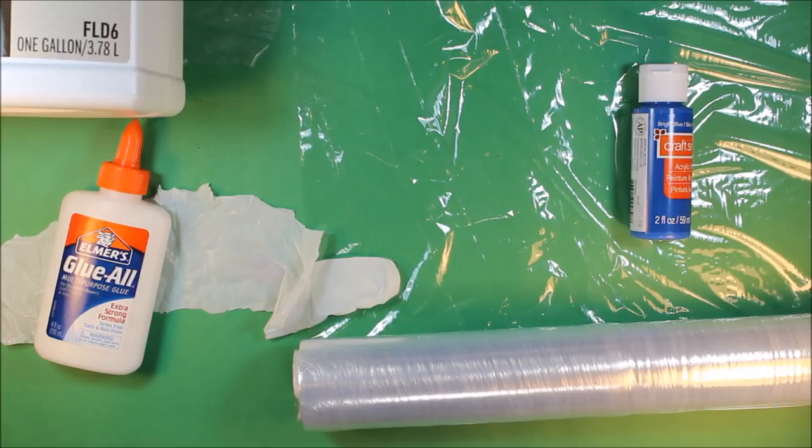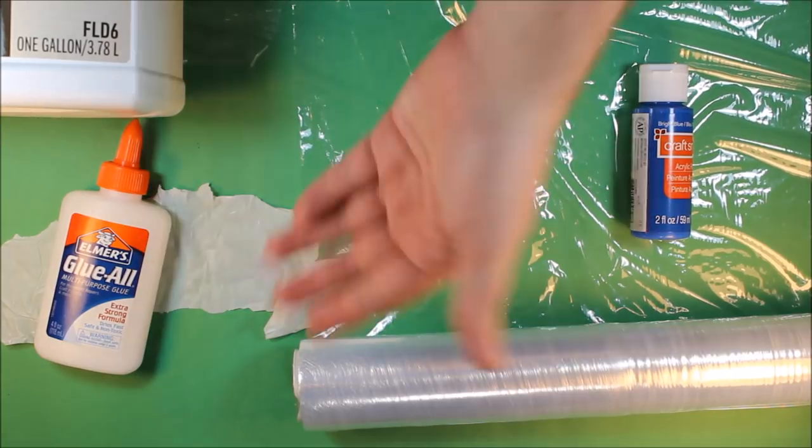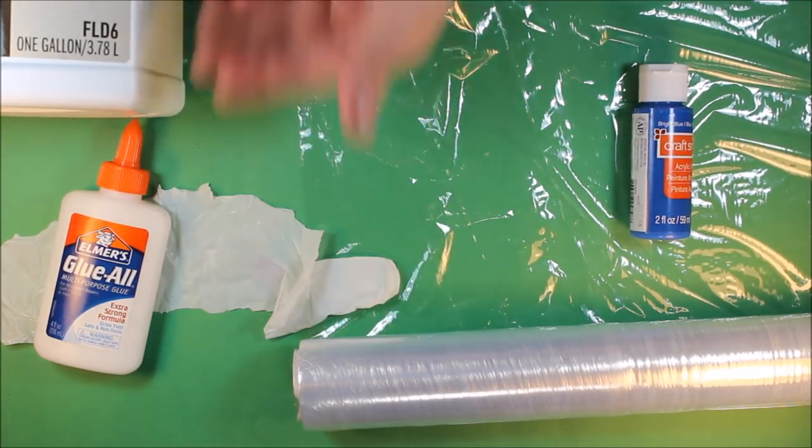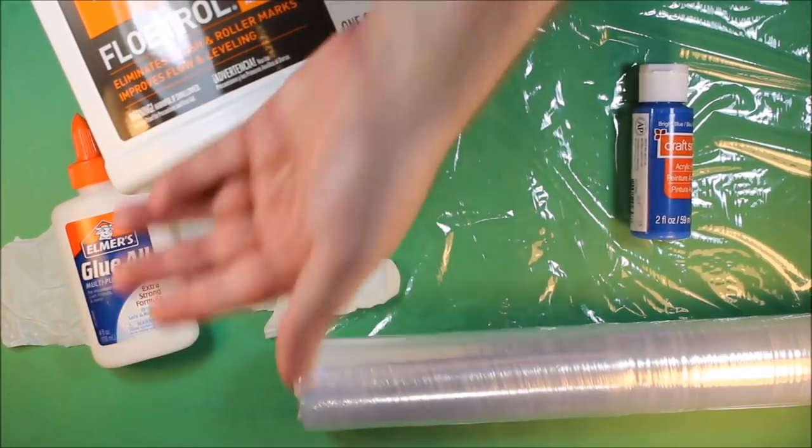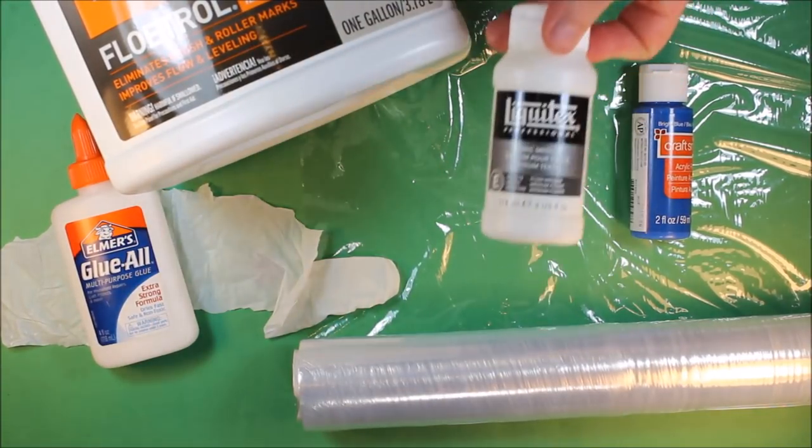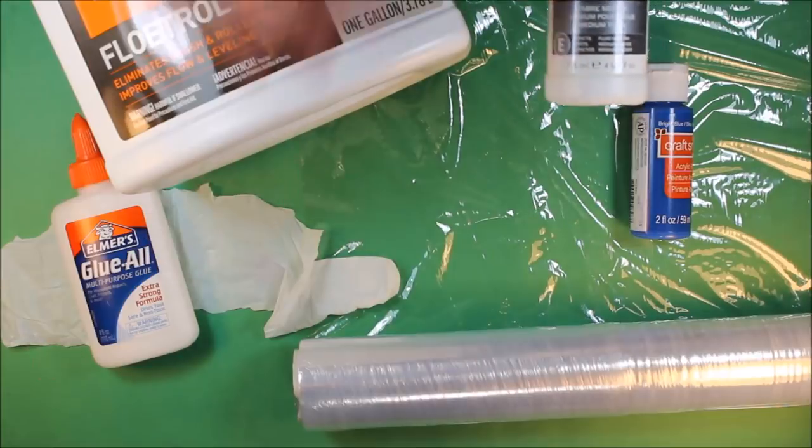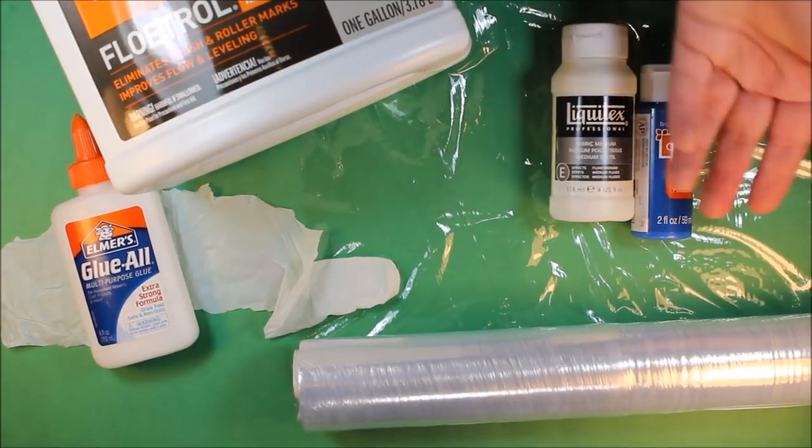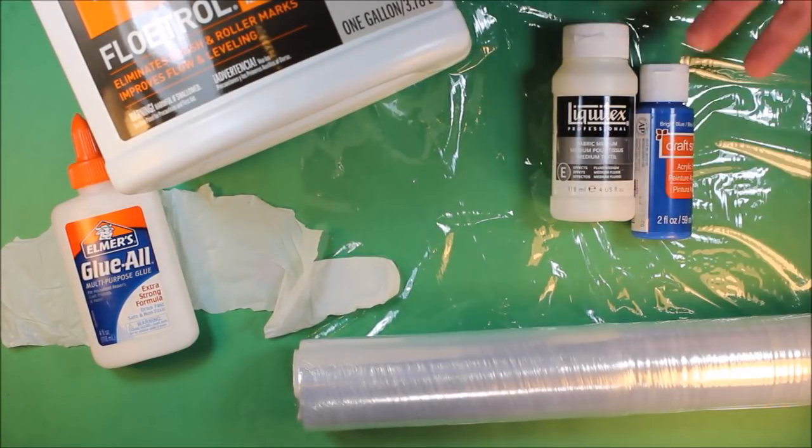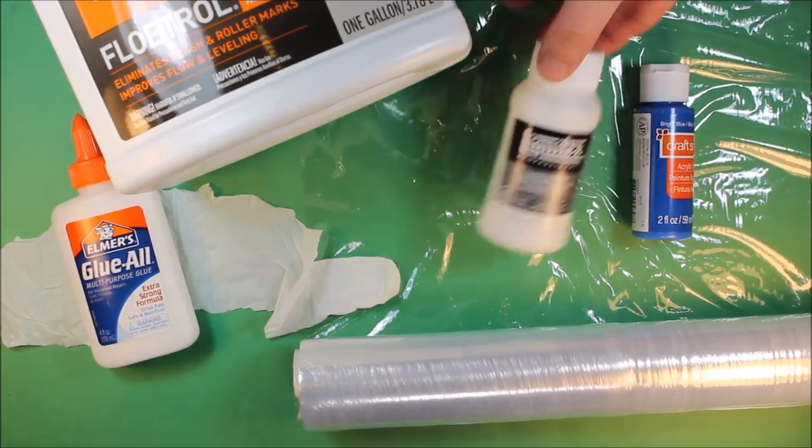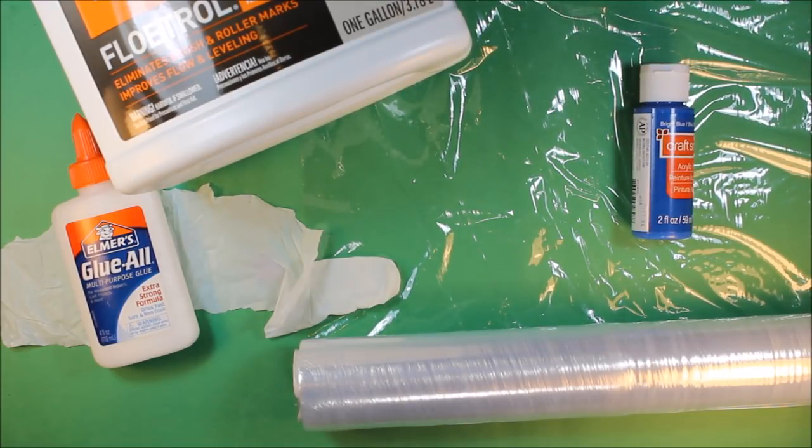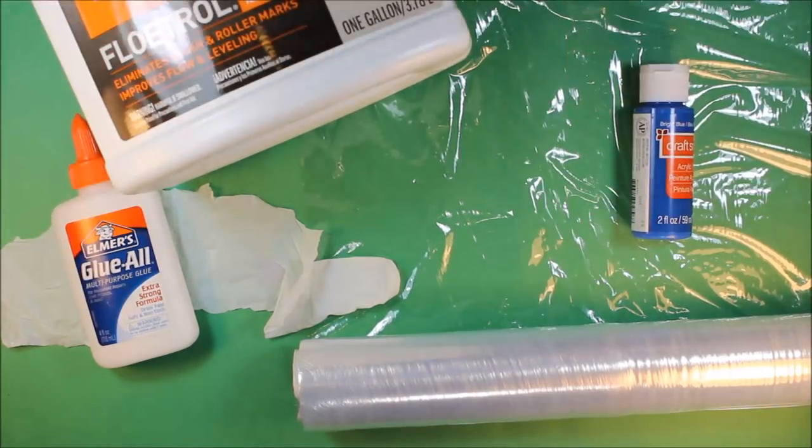So we're looking at the extenders and how you get cells with these. That is to say, we only need to look at these two specifically: our Floetrol and Glue All, because Liquitex is not considered an extender so it doesn't alter the properties of our acrylic paint, so there's no new information to demonstrate here.